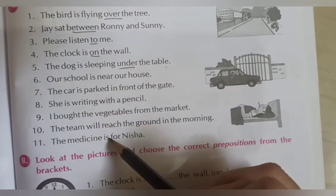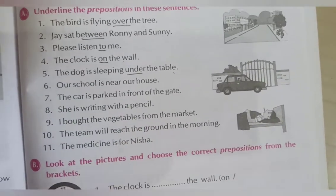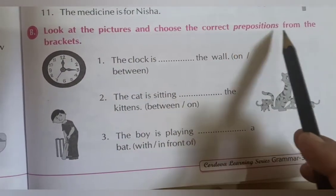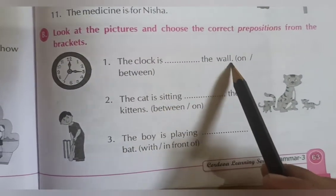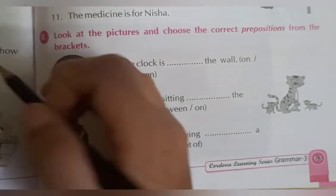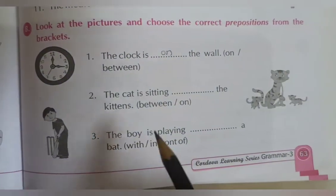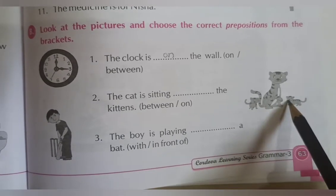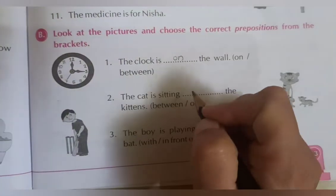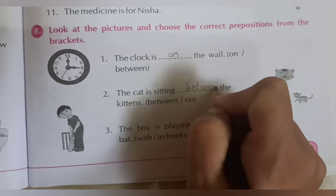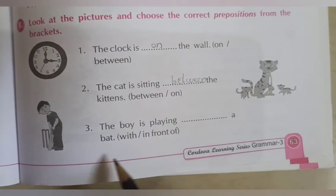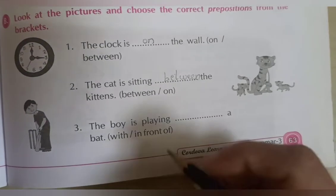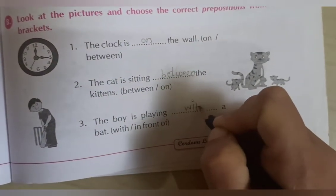You have to read the other sentences and identify and underline the prepositions. Next, look at the pictures and choose the correct preposition from the brackets. 'The clock is ___ the wall' — on or between? It is on the wall. 'The cat is sitting ___ the kittens' — is it on or between the kittens? It is between the kittens, so we write 'between'. 'The boy is playing ___ a bat' — with a bat or in front of a bat? The boy is holding the bat in his hand, so he is playing with a bat.